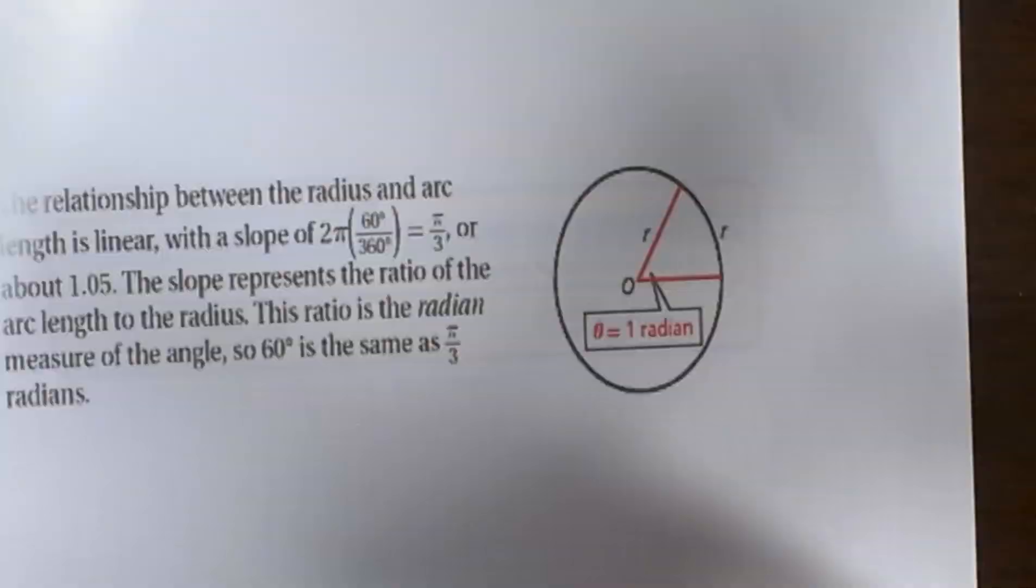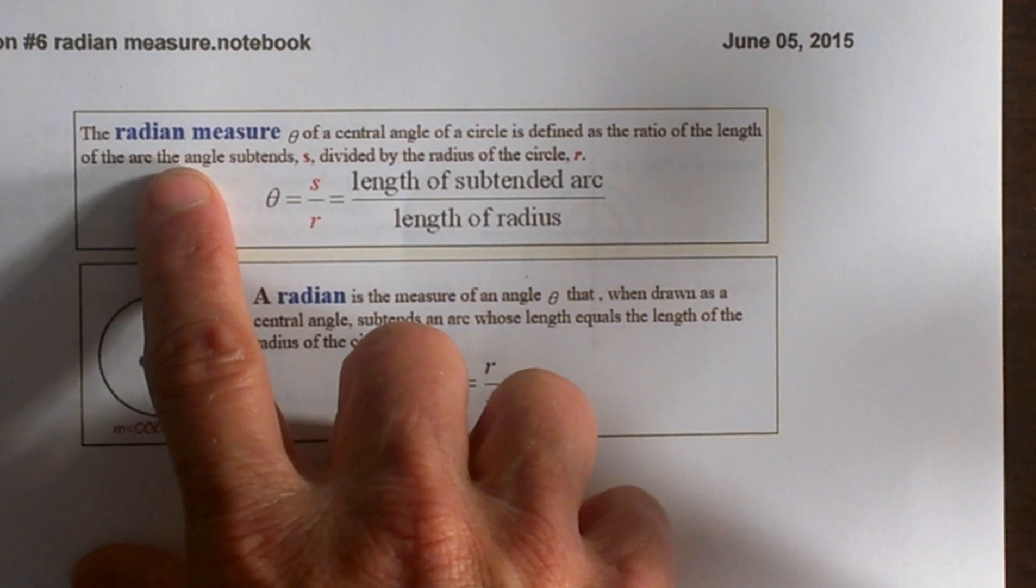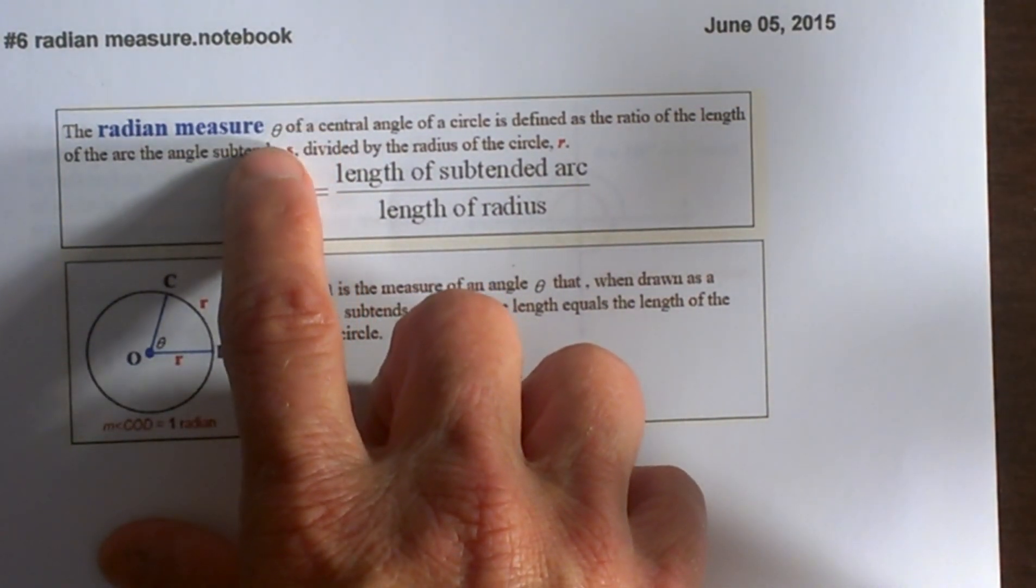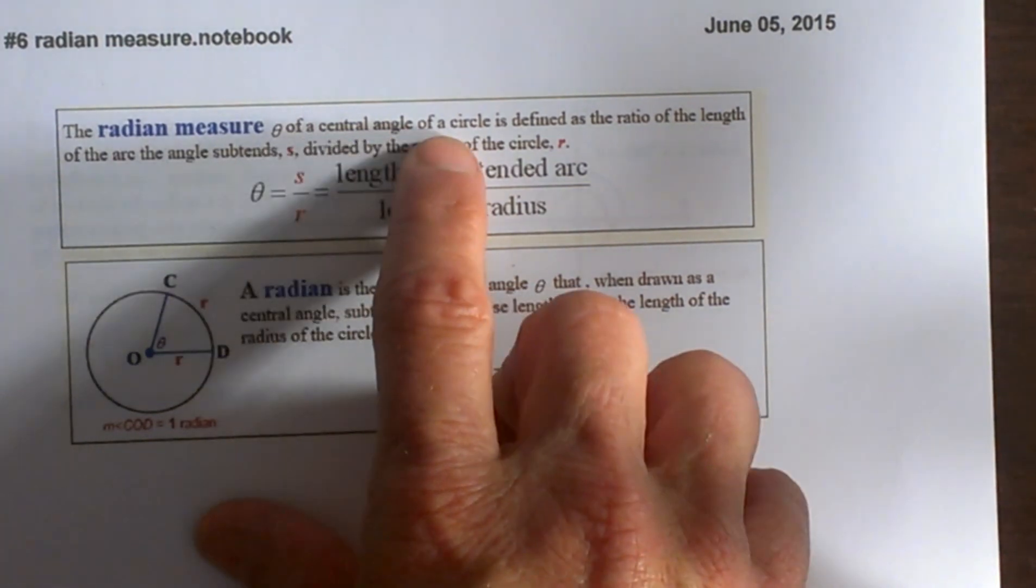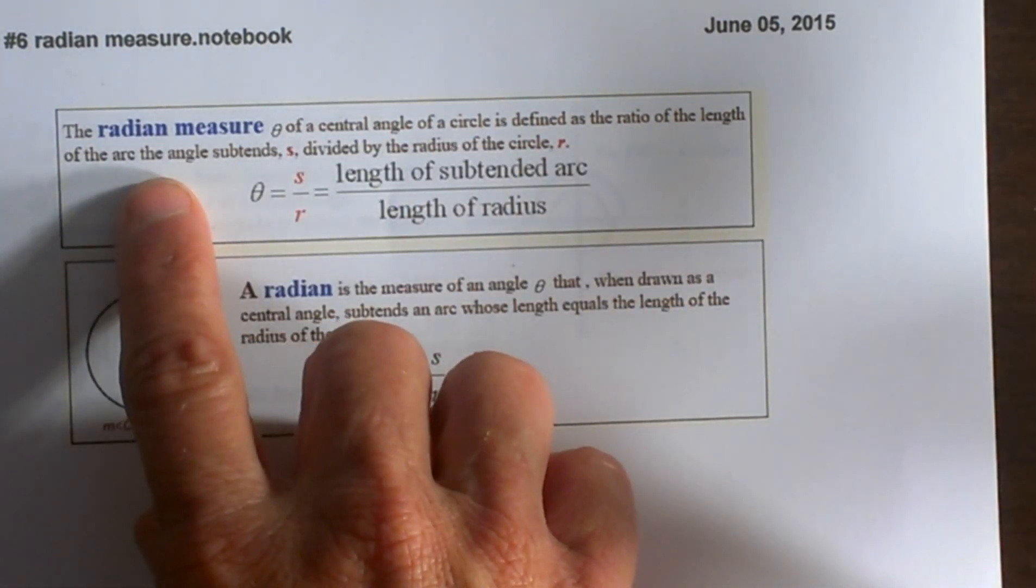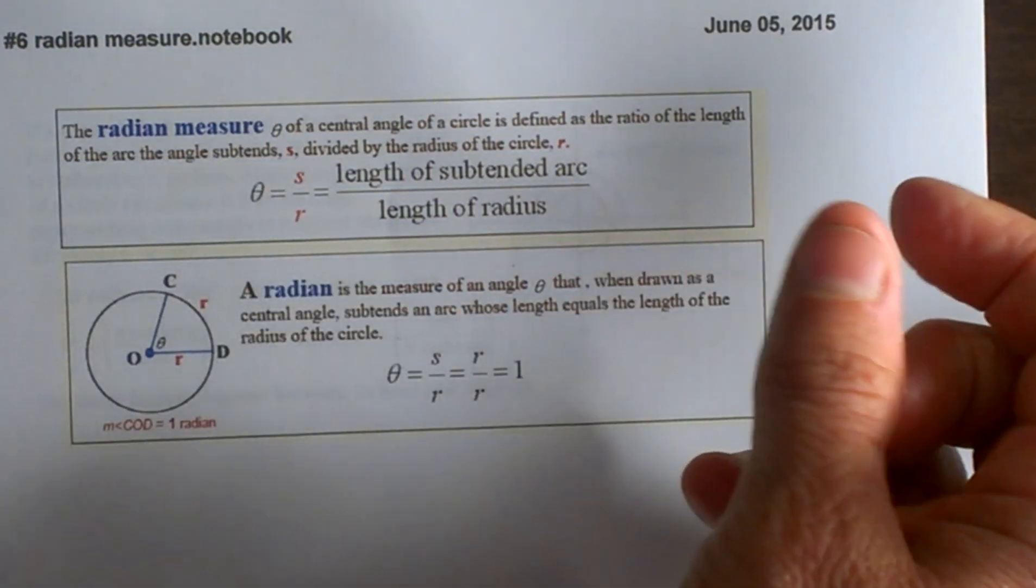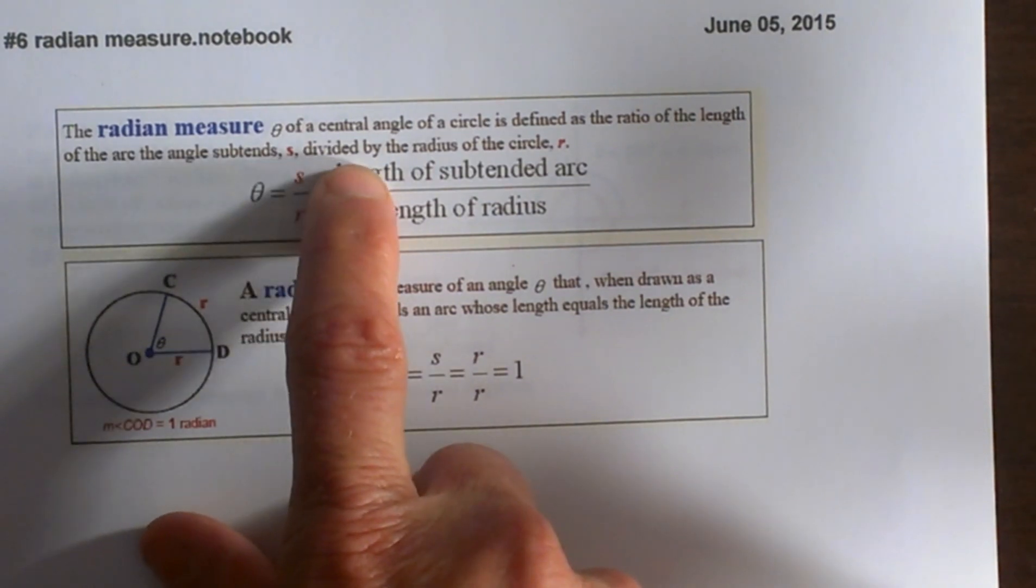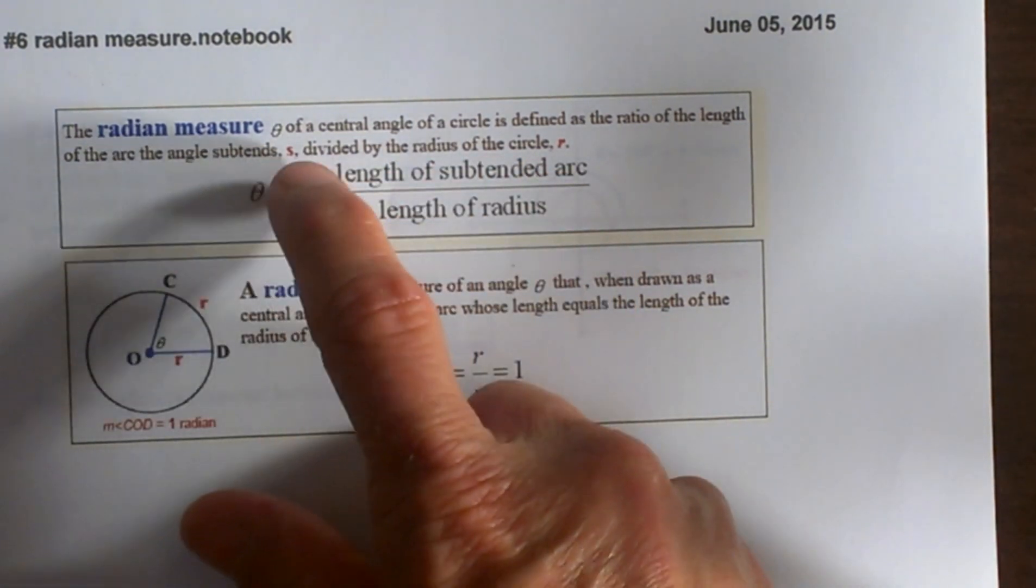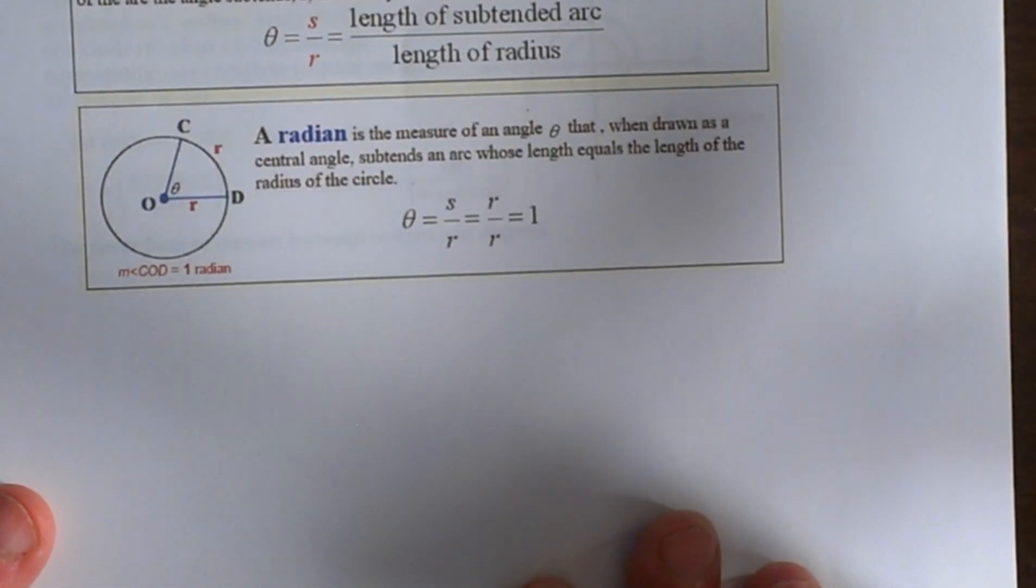Now let's look at the radian measure. We use this symbol theta, a Greek letter for a central angle of a circle. It's defined as the ratio of the length of the arc that subtends, which is inside that angle, divided by the radius. So it's arc length divided by radius, S divided by R, and that equals our angle theta or our radian.